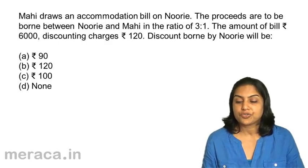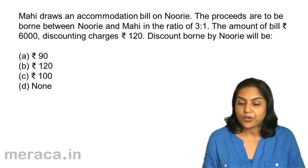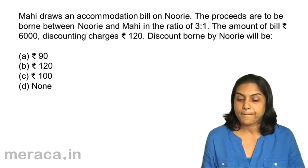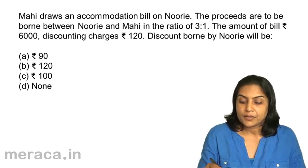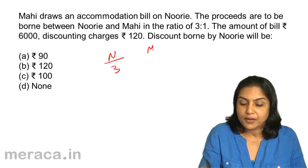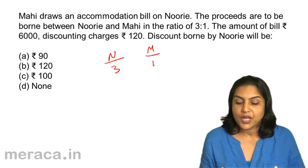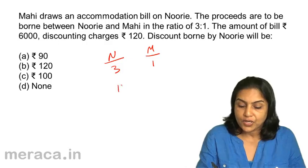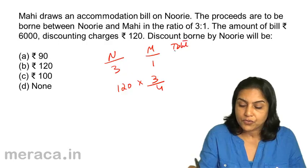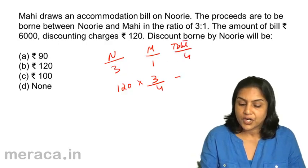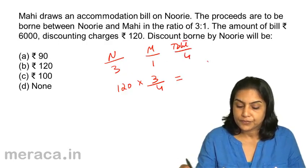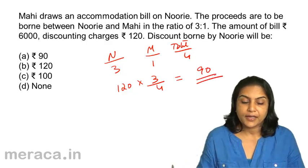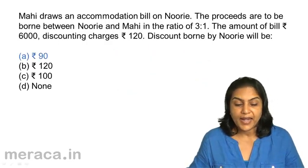Proceeds are in the ratio 3:1. Amount of the bill is Rs.6,000, discounting charges Rs.120. Nuri gets 3 parts and Mahi gets 1 part, so total is 4 parts. The amount of discount to be borne by Nuri would be: total discount Rs.120 multiplied by 3/4, which equals Rs.90. The correct answer is A) 90.